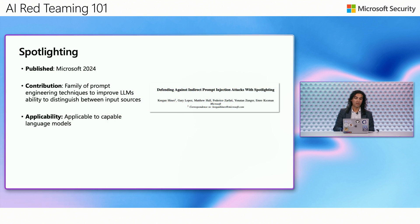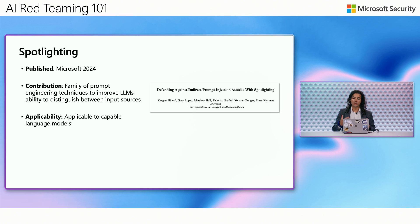One technique that we've developed is called spotlighting. We published a paper in 2024, and spotlighting is really a family of prompt engineering techniques that allows a large language model to better distinguish between known trusted inputs versus unknown and untrusted inputs. The idea is that we want to neutralize the harmful content or potentially untrusted instructions coming into our systems.